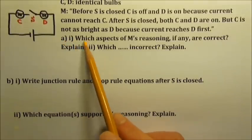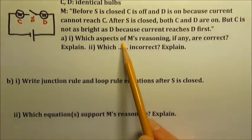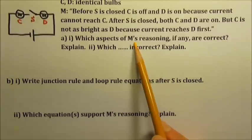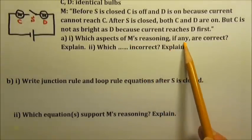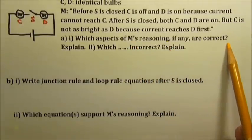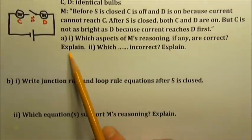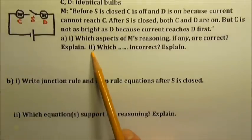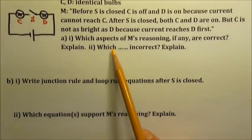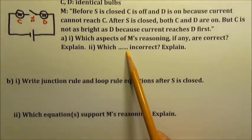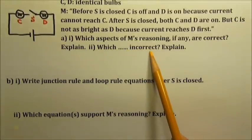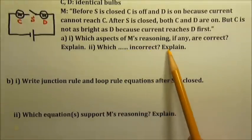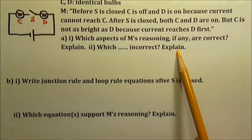Part A1: Which aspects of Student M's reasoning, if any, are correct? Explain your answer. Part A2: Which aspects of Student M's reasoning, if any, are incorrect? Explain your answer.